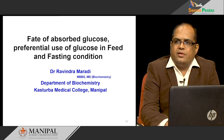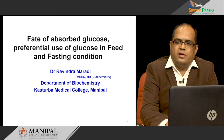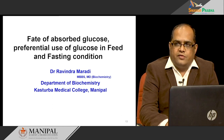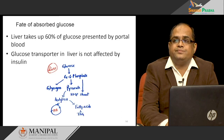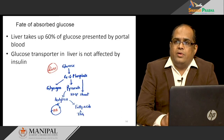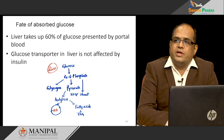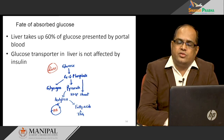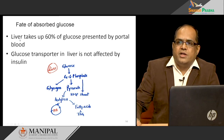Basically, what I am discussing is what happens to glucose when you are in a well-fed condition in different tissues and in the case of fasting condition. Whenever the liver takes the major glucose that is presented to it by portal blood, around 60 percent of glucose is taken up by the liver.